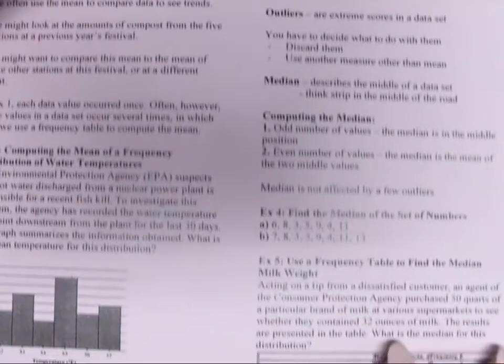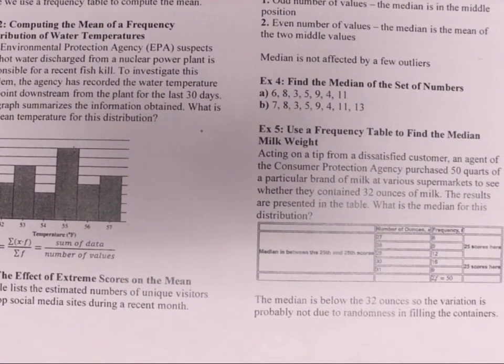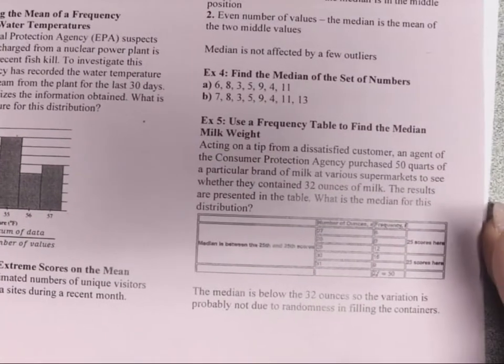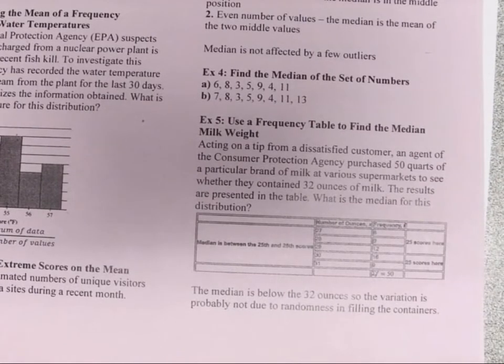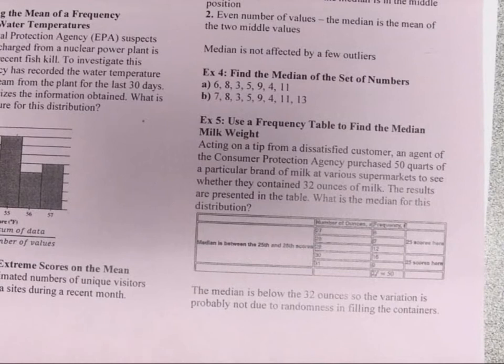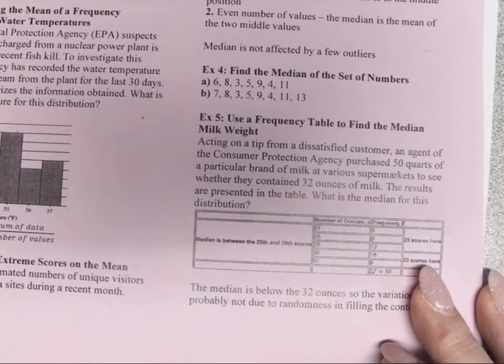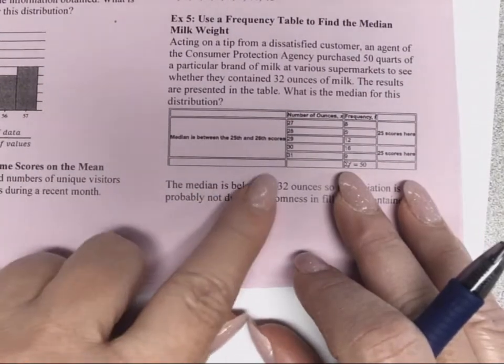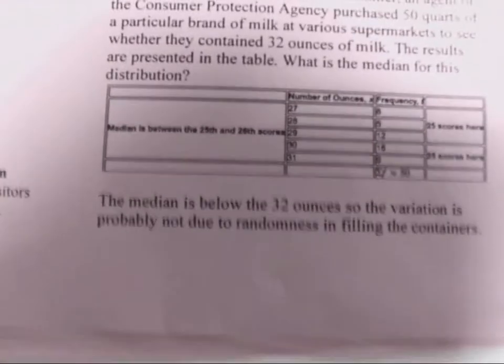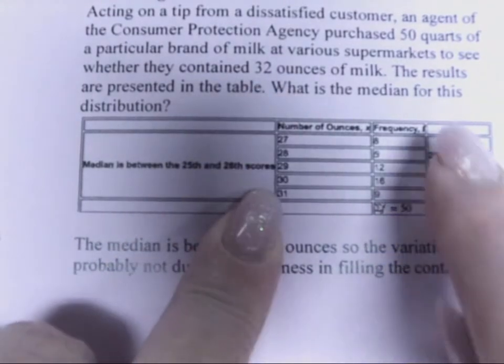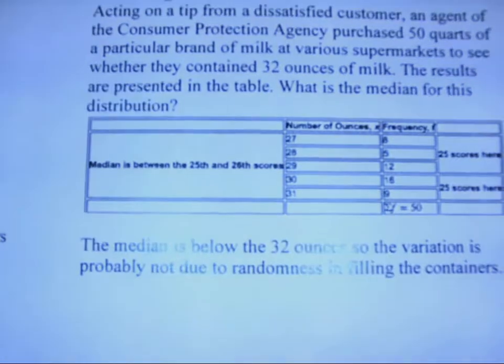We're going to use a frequency table to find the median milk weight. Acting on a tip from a dissatisfied customer, an agent of the Consumer Protection Agency purchased 50 quarts of a particular brand of milk at various supermarkets to see whether they contain 32 ounces of milk. The results are presented in the table, and we need to know what is the median for the distribution. Here are our data values, and this is the frequency in which they occurred.